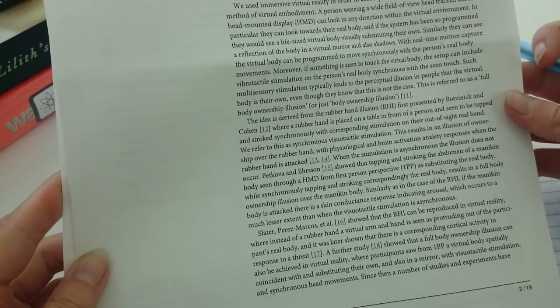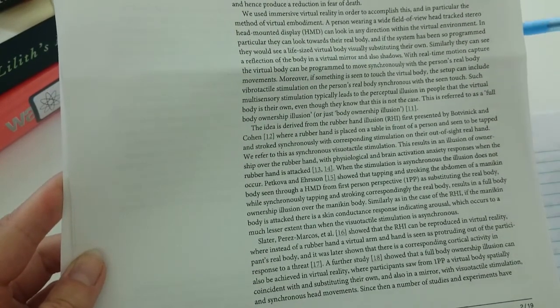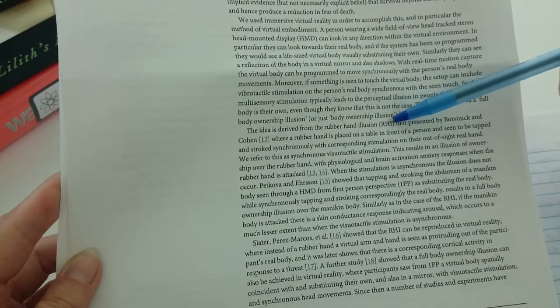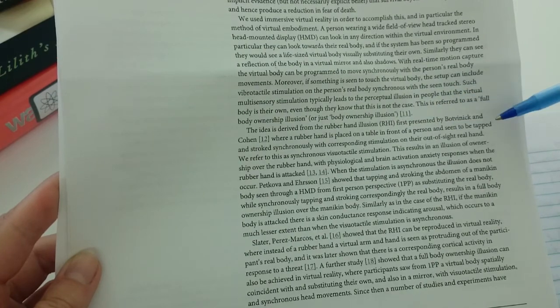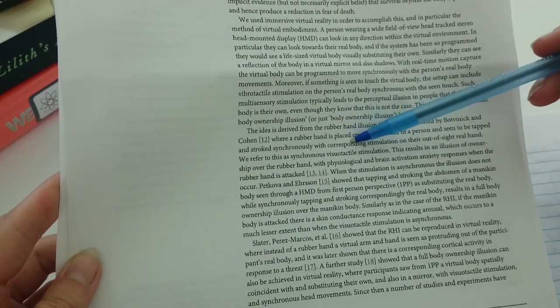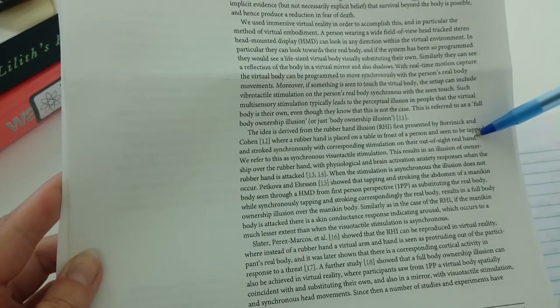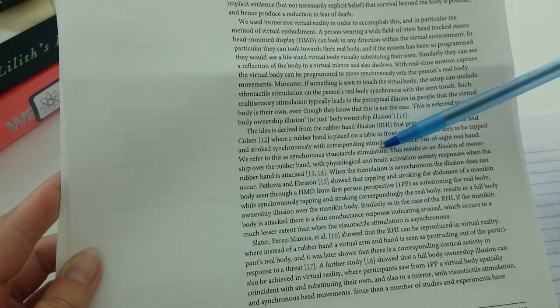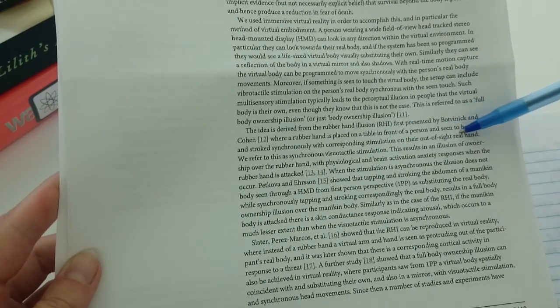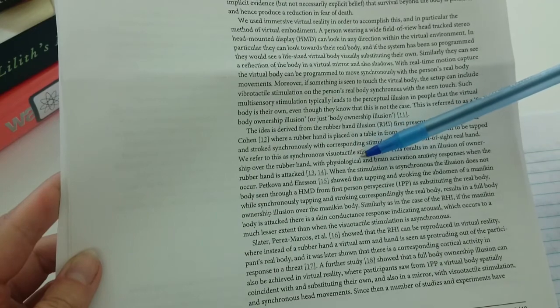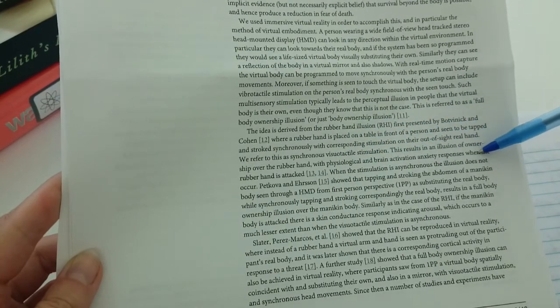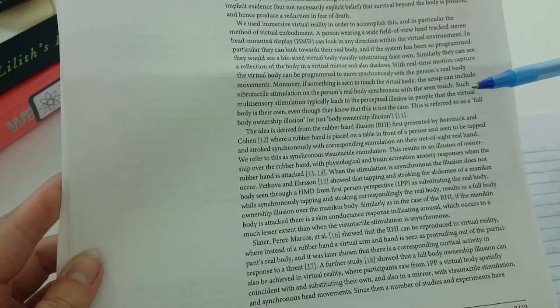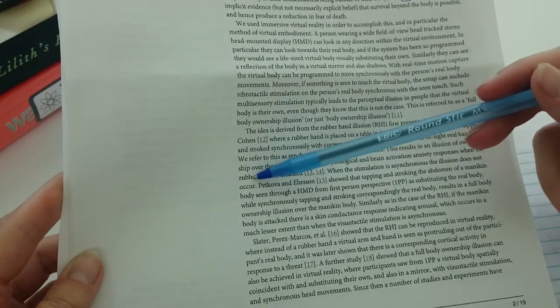The idea is derived from the rubber hand illusion, first presented by Vinnick and Cohen, where a rubber hand is placed on a table in front of a person and seen to be tapped and stroked synchronously with corresponding stimulation on their out-of-sight real hand. We refer to this as synchronous visual-tactile stimulation. This results in an illusion of ownership over the rubber hand. When the stimulation is asynchronous, the illusion does not occur.